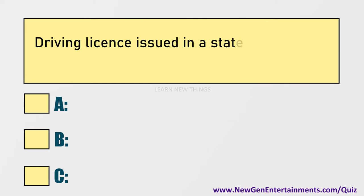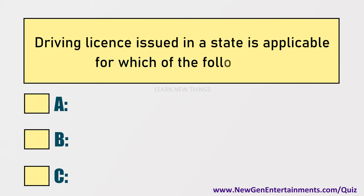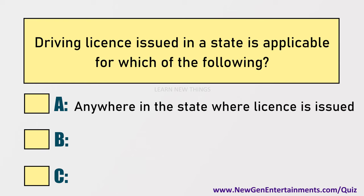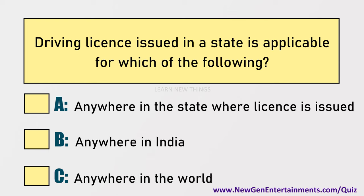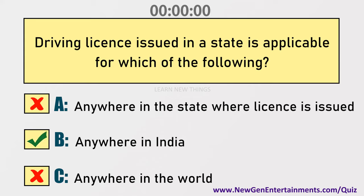A driving license issued in a state is applicable for which of the following? Options are: A) Anywhere in the state where the license is issued, B) Anywhere in India, C) Anywhere in the world. Answer: Option B, Anywhere in India.